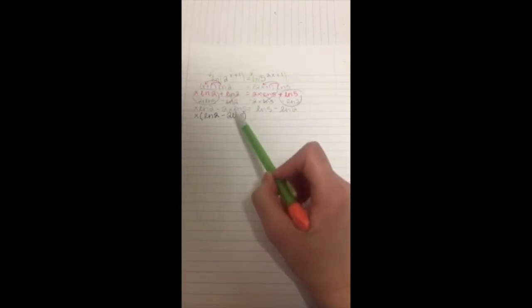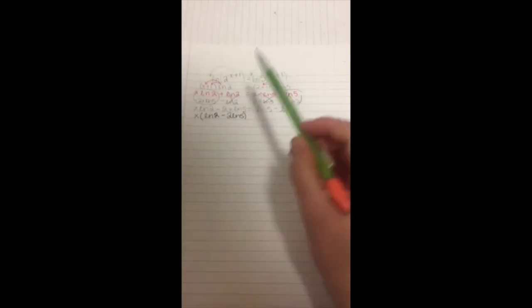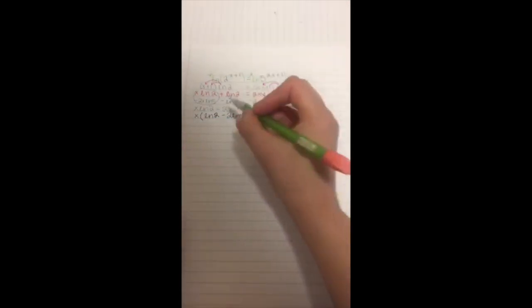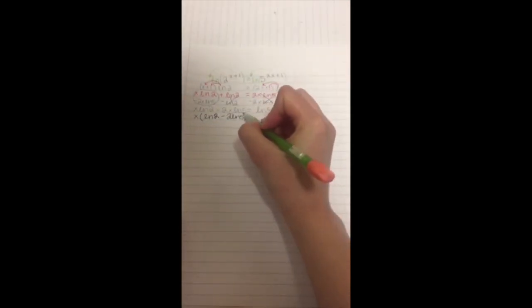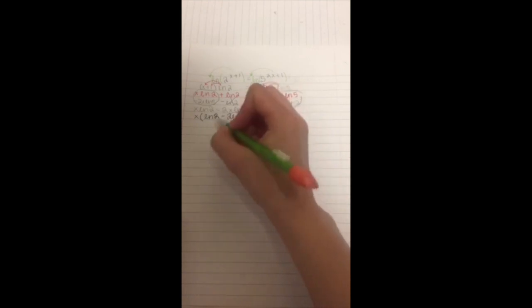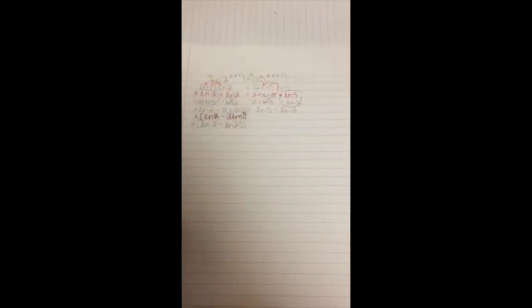So since we did it up here, like this is the exponent, and we take it out, this one we would have to put it back. So it would go right here, so that would be a 2 right here. So it would be the natural log of 25 because 5 times 5 is 25. And this is what you're left with.